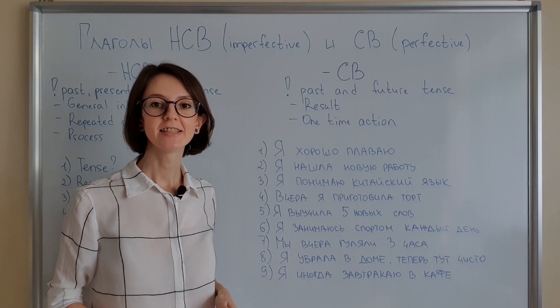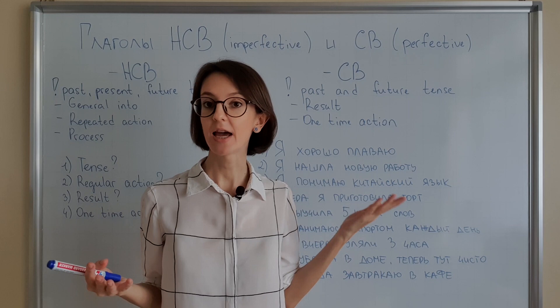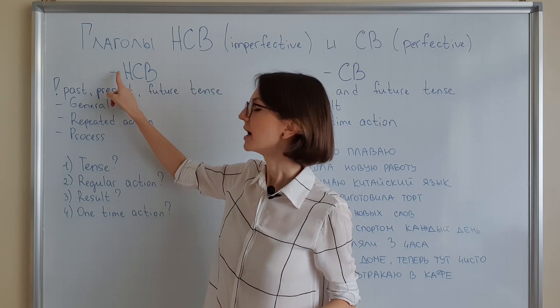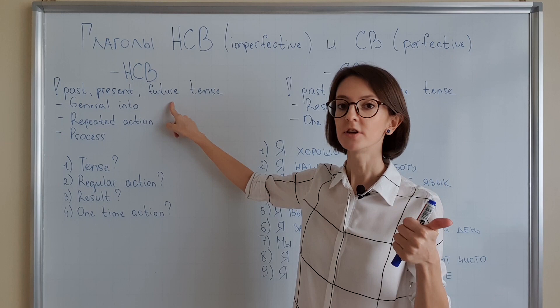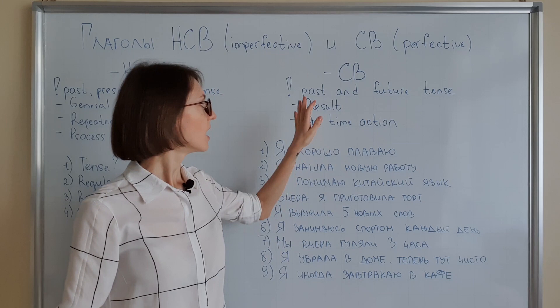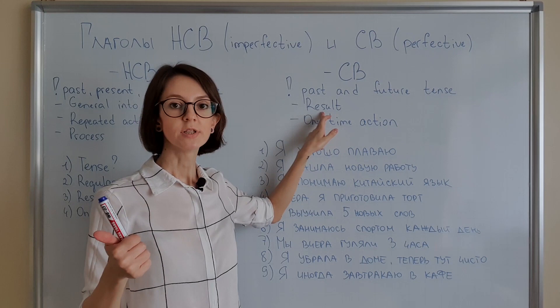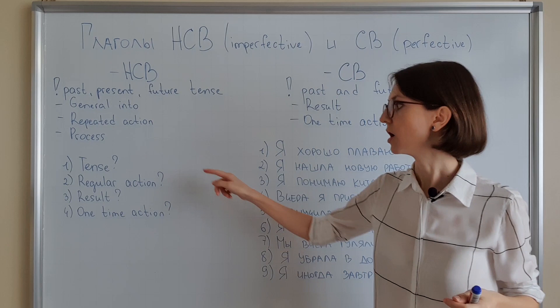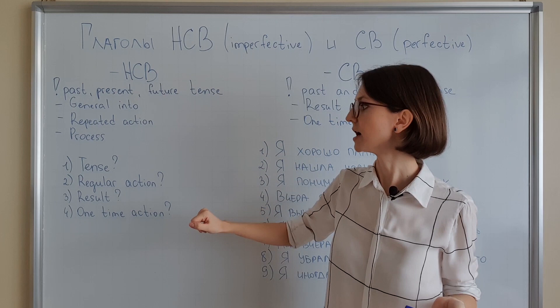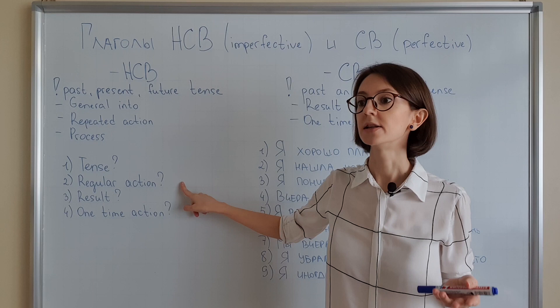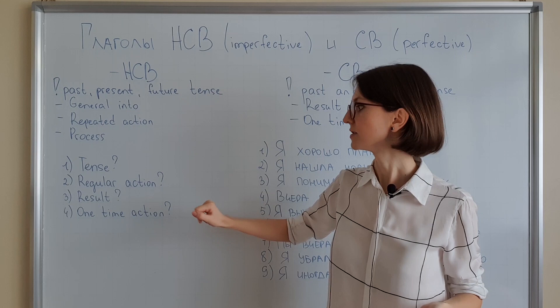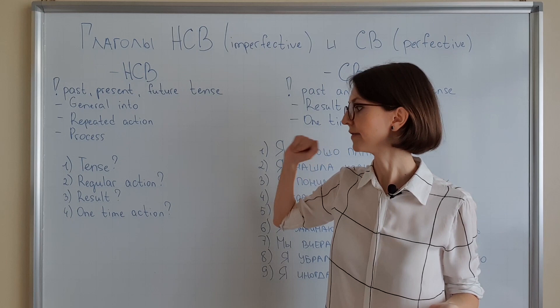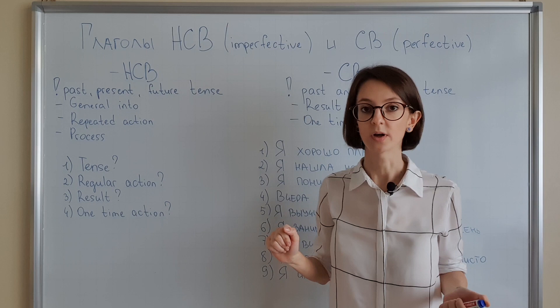There are nine sentences here, and you need to tell me: which verb did I use — NSV or SV? A small reminder: NSV we use with past, present, and future tense, when it is general information, repeated action, or a process. SV we use with past and future tense, when there is a result and when it's a fact or one-time action. Ask yourself: what tense is it? If it's present, right away it's NSV. Do you see words like никогда, часто, каждый день? Then it's NSV. Is there a result? Then it's SV. Is it a one-time action? SV as well.